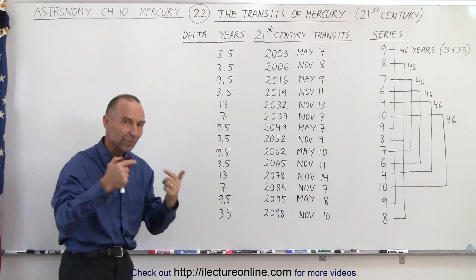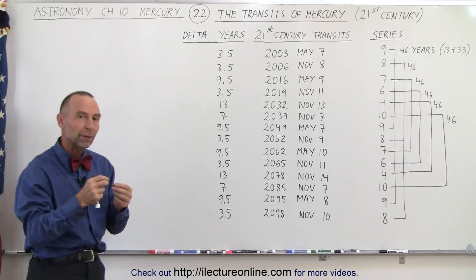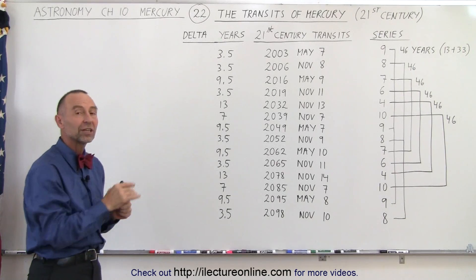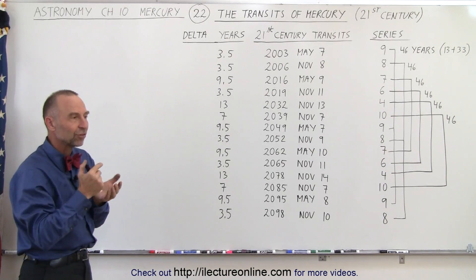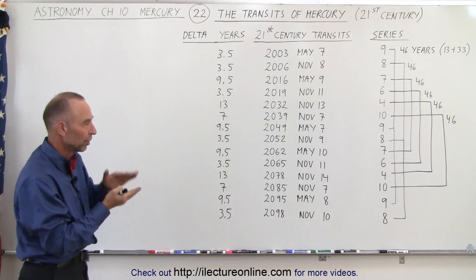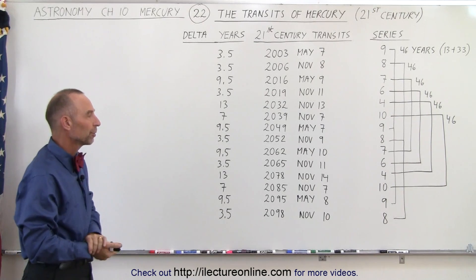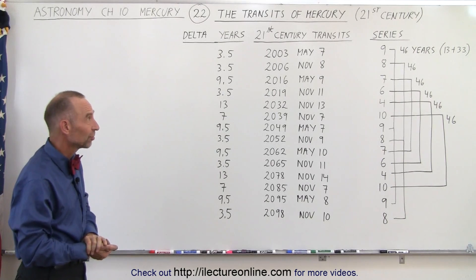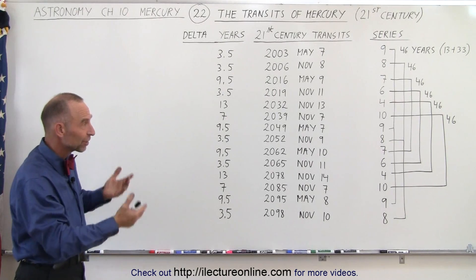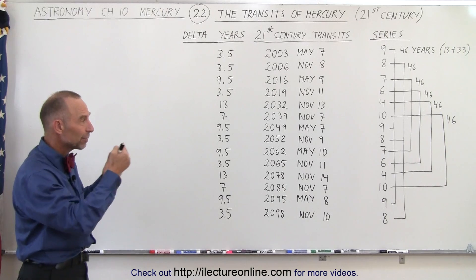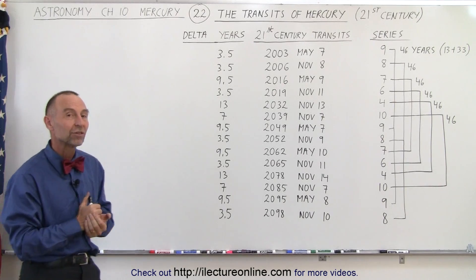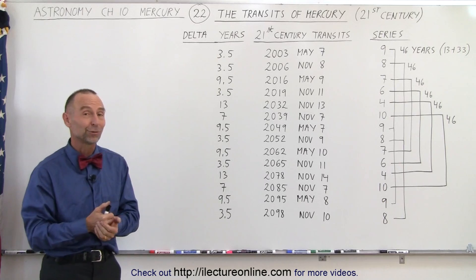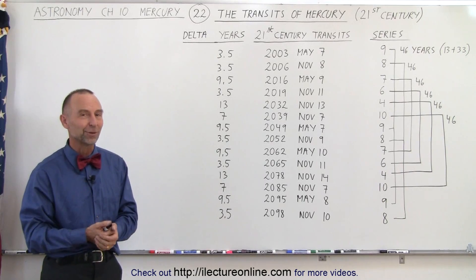You can see that there seems to be an almost virtual repetition of these events, just slightly shifted on the calendar because the number of rotations aren't exactly an integer number for those number of years, but very close. That's why you see these series repetitions. So that gives you a good idea of how we can predict when the next transit is going to occur for Mercury — and those are the ones we're going to see in this century.